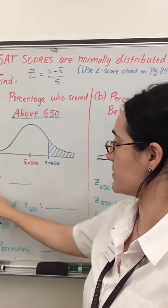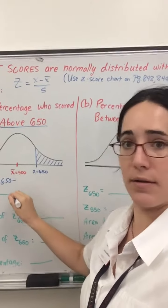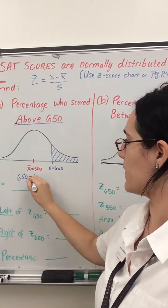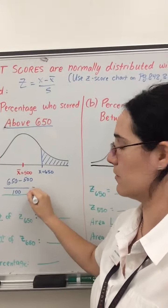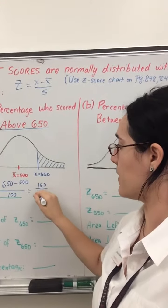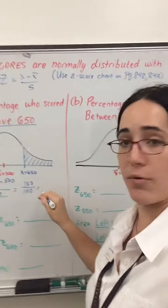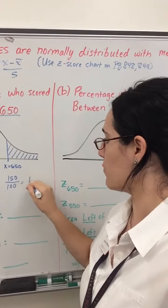Here we see, we need to find our z-score for 650. So we take x is 650 minus our mean, which is 500, divided by our standard deviation, which is 100. We'll get 150 divided by 100. Always round your z-scores to two decimal places, to the nearest hundred, and you get 1.50.